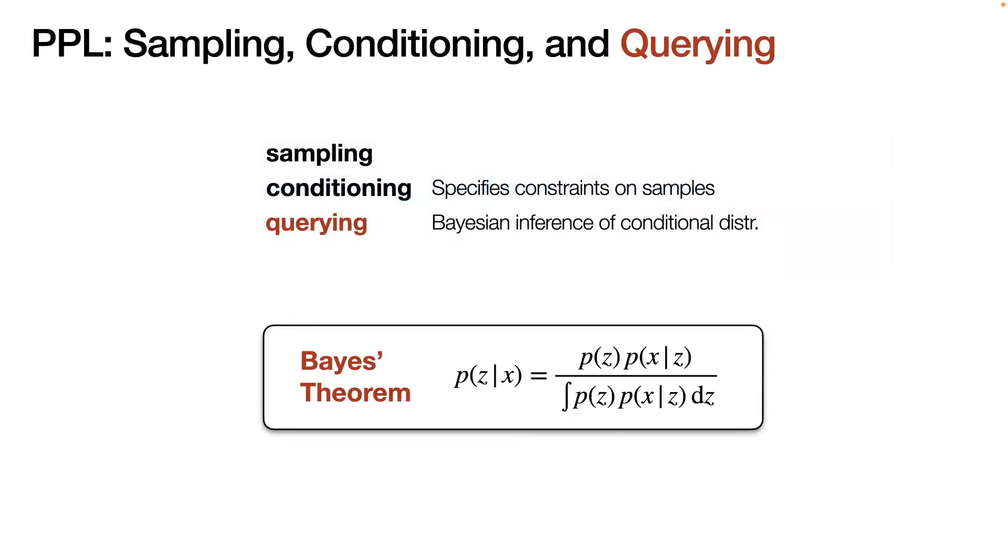Probabilistic programming languages are powerful tools for modeling and solving Bayesian inference problems. A PPL has three essential features: sampling, conditioning, and querying. Sampling corresponds to making random choices. Conditioning amounts to imposing constraints on samples. The sampling and conditioning together mean that a probabilistic program defines a conditional distribution. And finally, querying corresponds to applying Bayesian inference to infer the conditional distribution.